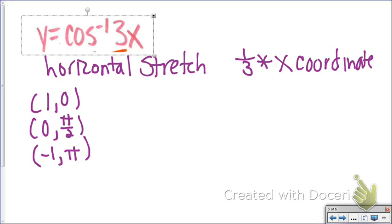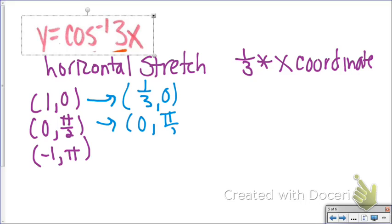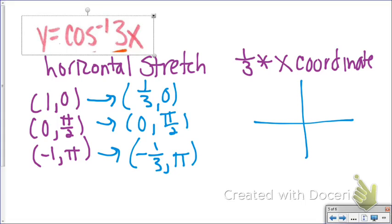To transform these points, I multiply the X coordinate by 1/3. So (1, 0) becomes (1/3, 0), (0, π/2) stays (0, π/2), and (−1, π) becomes (−1/3, π). After I graph those, I'm done. The parent function would just be a little wider, going to −1 and 1 instead.